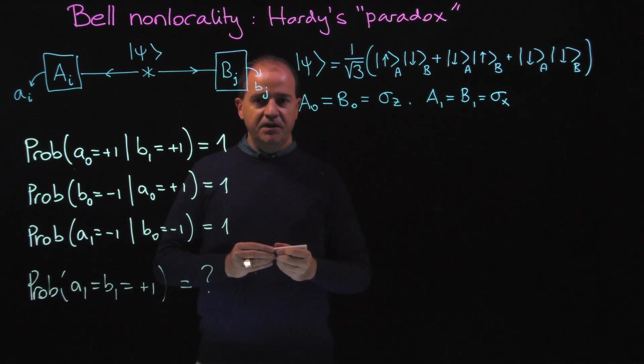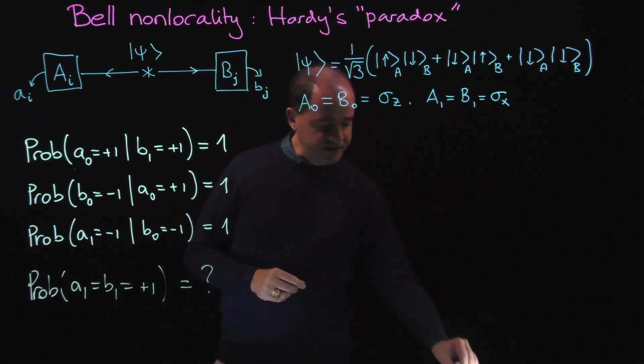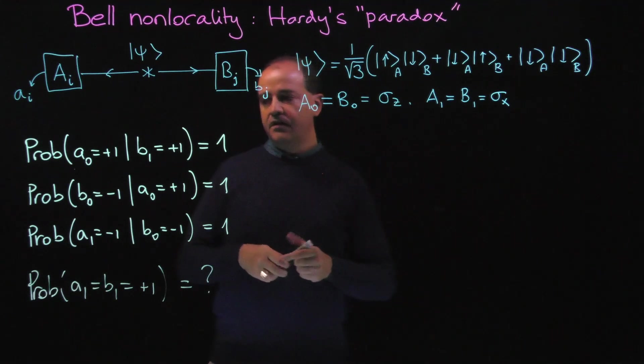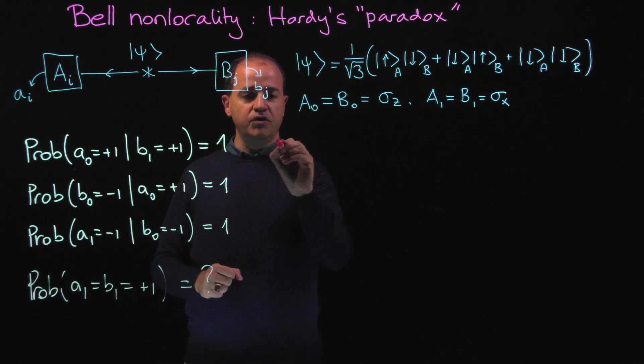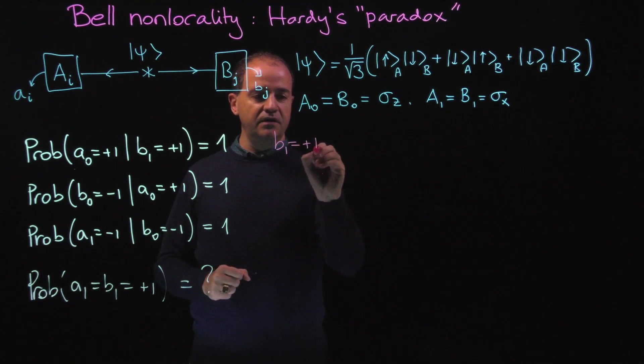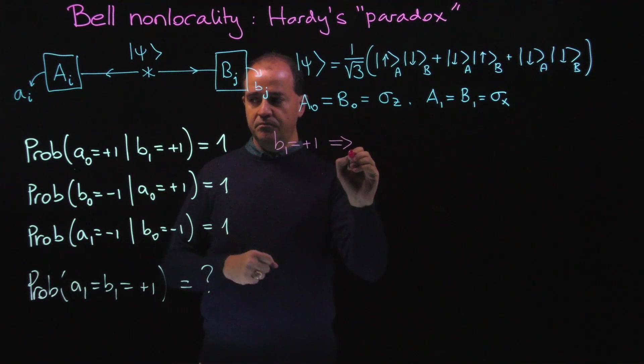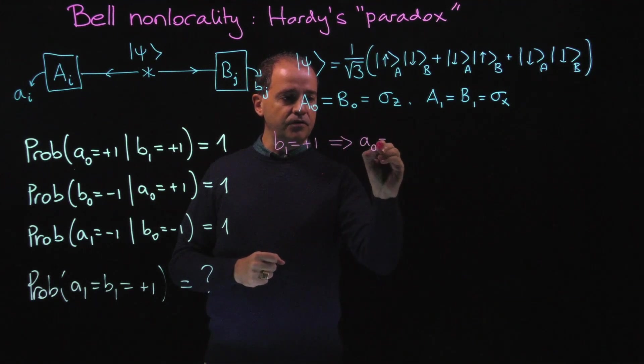Let's start from the first equation. We start with B1 equals plus 1. This clearly implies—that's the meaning of this equation—A0 equals plus 1.